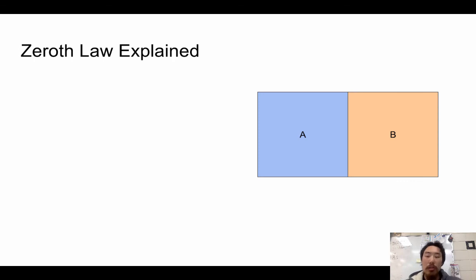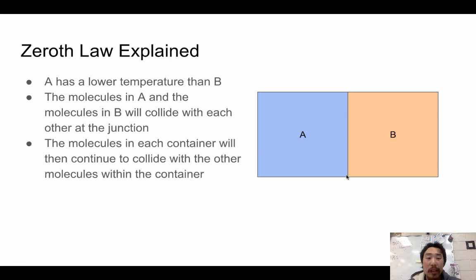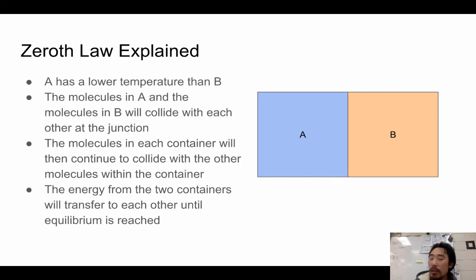Graphically: system A has a lower temperature than B. The molecules at the junction between A and B collide with each other, and those collisions propagate throughout each container, transferring energy back and forth. The energy from the two containers — because all molecules have kinetic energy and transfer some upon collision — goes on until equilibrium is reached.